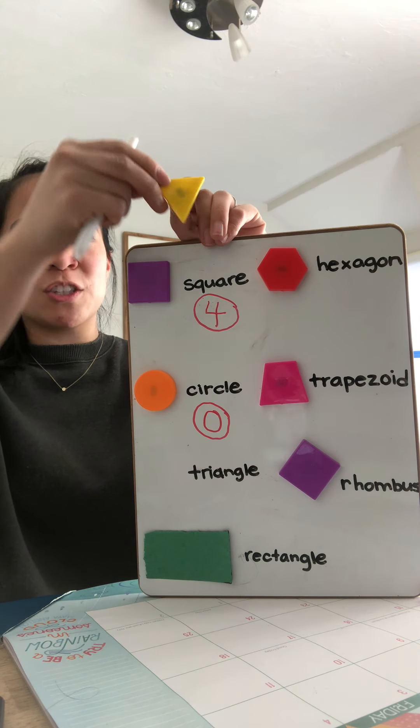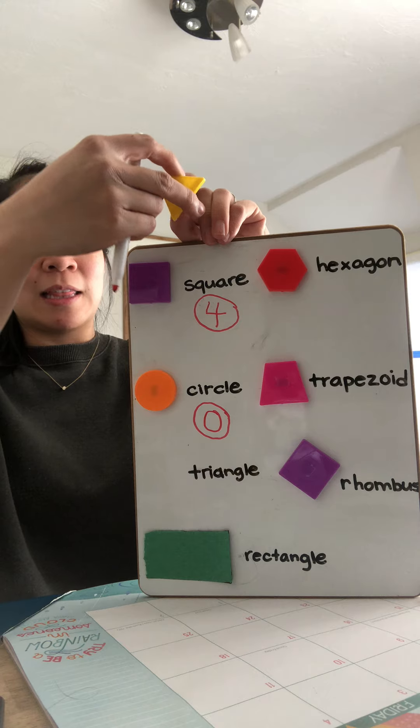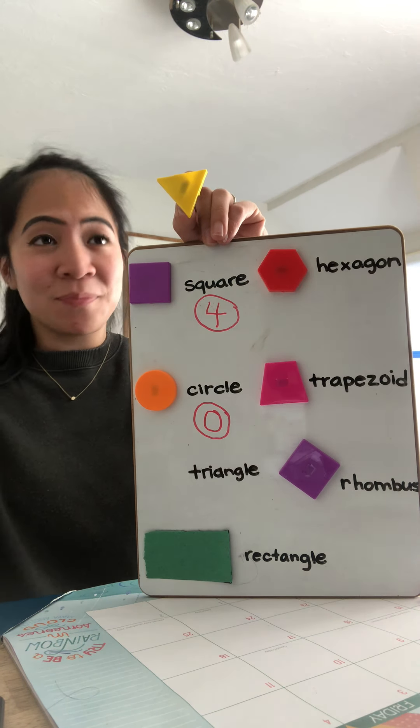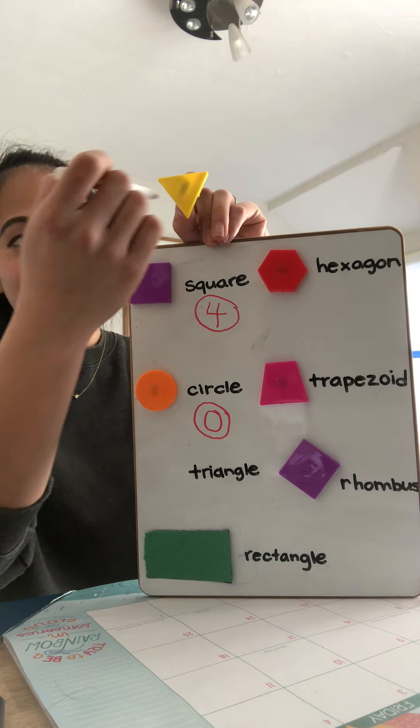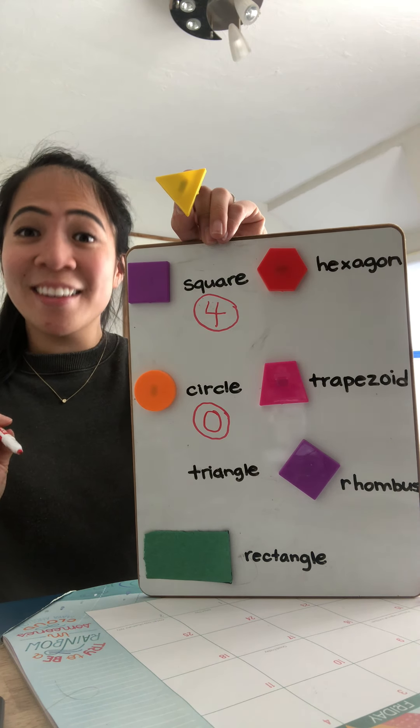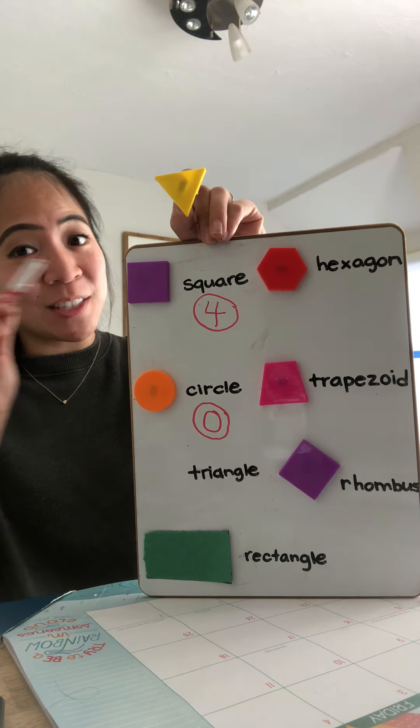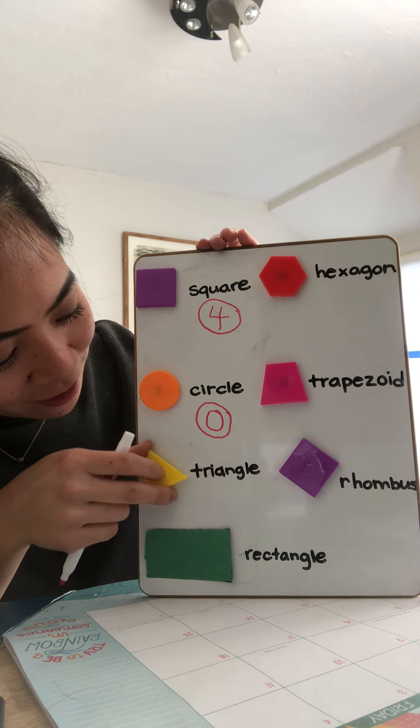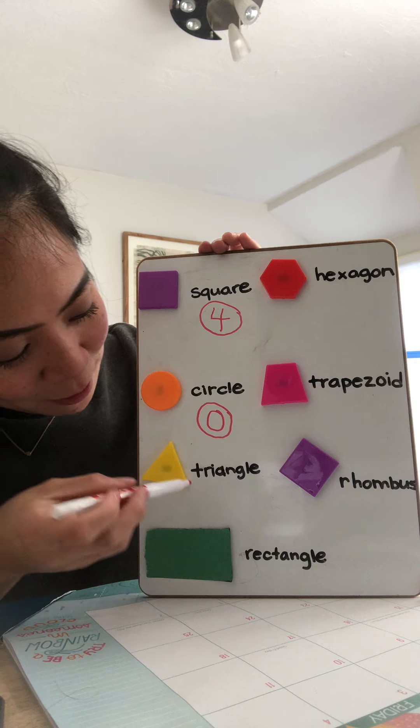What if I turn this triangle upside down? Like this. Does it still have three sides? Let's see. One, two, three. It still has three sides. So if a triangle is turned upside down, it's still a triangle. It's got three sides.